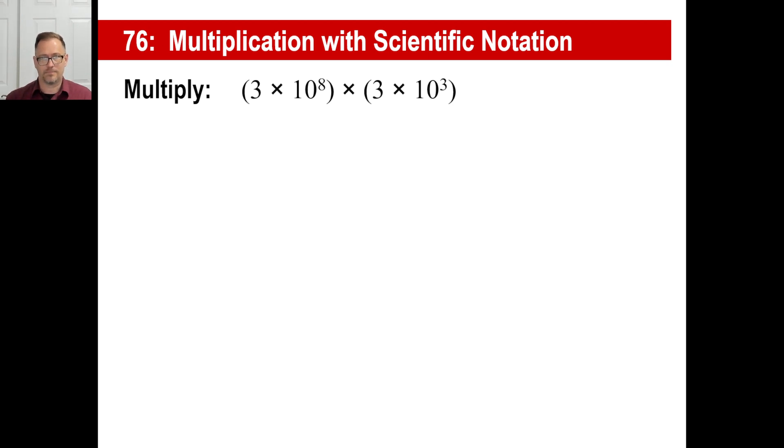Here's another one. 3 times 10 to the 8th times 3 times 10 to the 3rd. There we go. 3 times 3, 9. 10 to the 8th times 10 to the 3rd, 10 to the 11th. There we go. You can stop right there. That's a gigantic number.